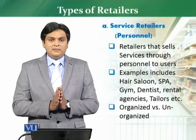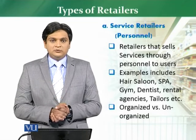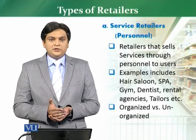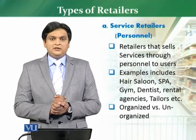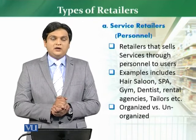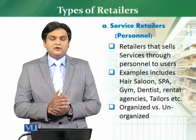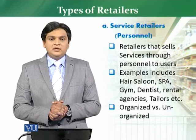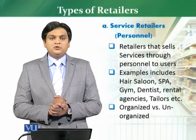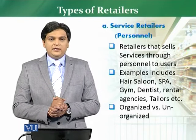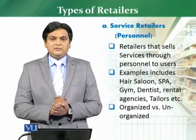We have a lot of examples which are available in front of you, you can see on the screen as well. For example, if we talk about hair saloon, we talk about barber shop, repair and maintenance outlet, spa, dentist, gym, fitness club. So these are all sorts of examples which you will find which are in the personal services retailer parameter, and this is also where we already are in the market.